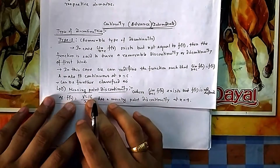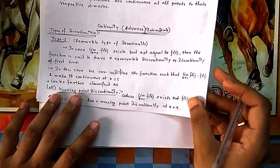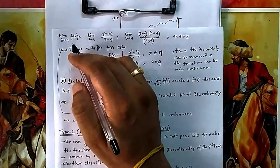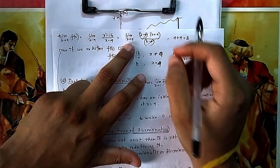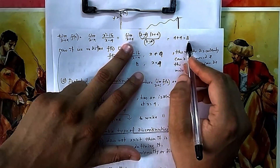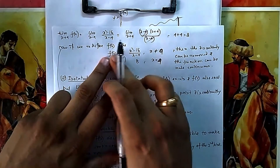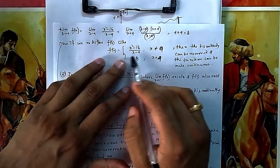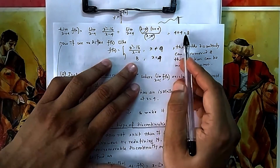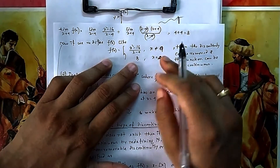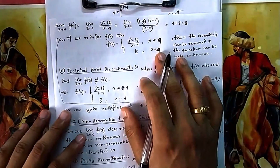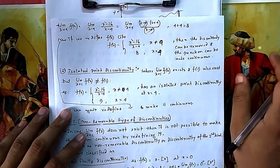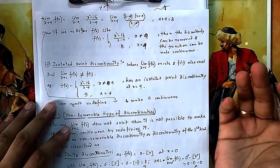So the function has missing point discontinuity at x = 4 because the value is not defined there. However, if you take the limit as x tends to 4, you can cancel — since x is approaching 4, not equal to it — and the function approaches 8. Now you can redefine the function: f(x) equals the original expression when x ≠ 4, and equals 8 when x = 4. This makes the function continuous, removing the discontinuity.